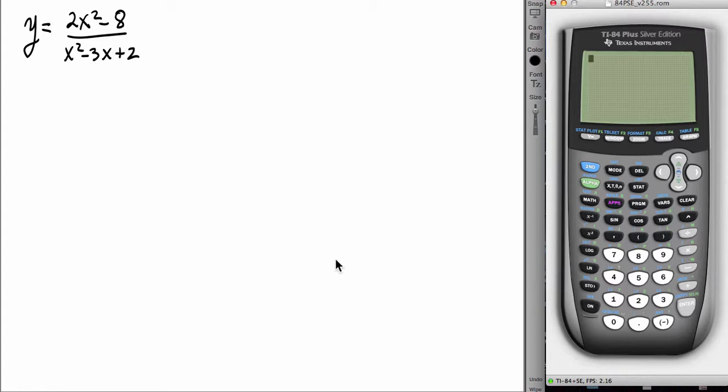As I mentioned, rational functions can also have a feature called a hole, and this particular example will contain that sixth feature, a hole.